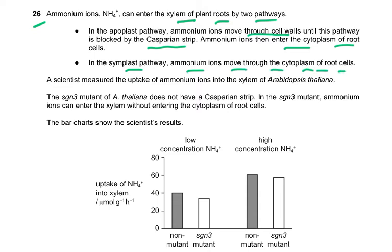A scientist measured the uptake of ammonium ions into the xylem of Arabidopsis thaliana. The SgN3 mutant of A. thaliana does not have a Casparian strip. In the SgN3 mutant, ammonium ions can enter the xylem without entering the cytoplasm of root cells, because they don't have a Casparian strip. The bar chart shows the scientist's results.